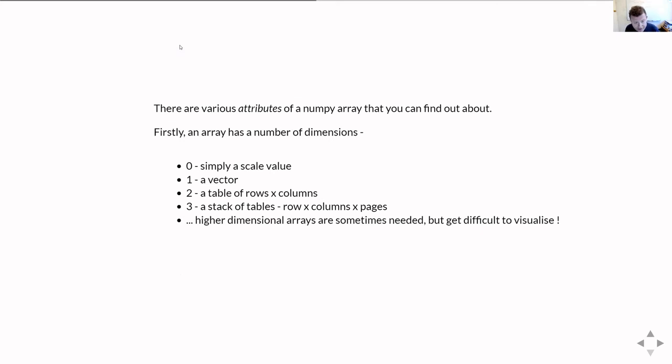There are then various attributes about the array that we might want to care about. First of all, you might want to know about the number of dimensions. If the number of dimensions is zero, that means you've just got a simple scalar value. If the number of dimensions is one, it's a vector. Two is obviously a table. In numpy, that's always specified as the number of rows by the number of columns. We call this row major, meaning that the first index is the row and the second index you give everything is the column.